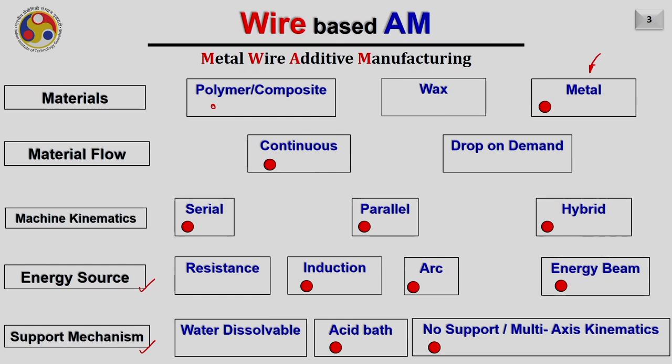Before we start, although the first additive manufacturing process is considered to be vat photo-polymerization, I found when searching patents that the first patent for metal additive manufacturing technology was filed long back in 1920. It is important to relook into the history of metal additive manufacturing. Another benefit of metal wire-based systems is that these processes can also be used for repairing and restoring features, not only for building parts.